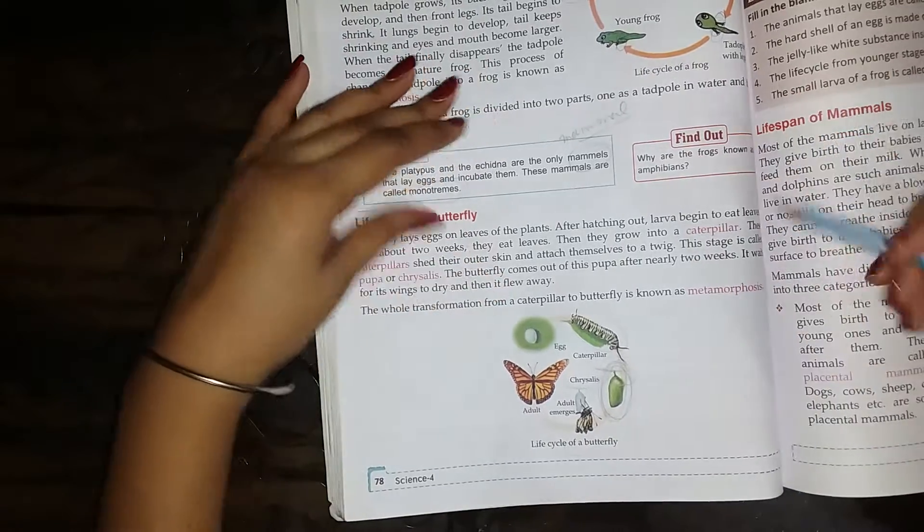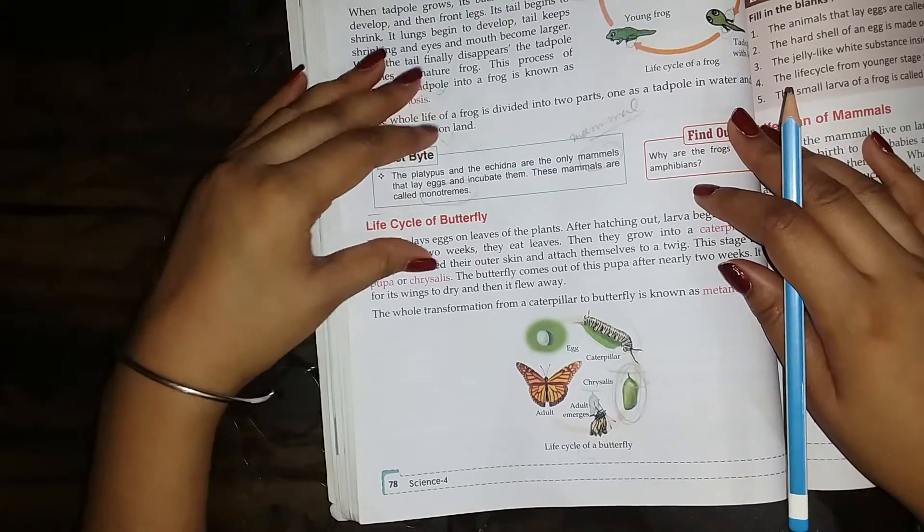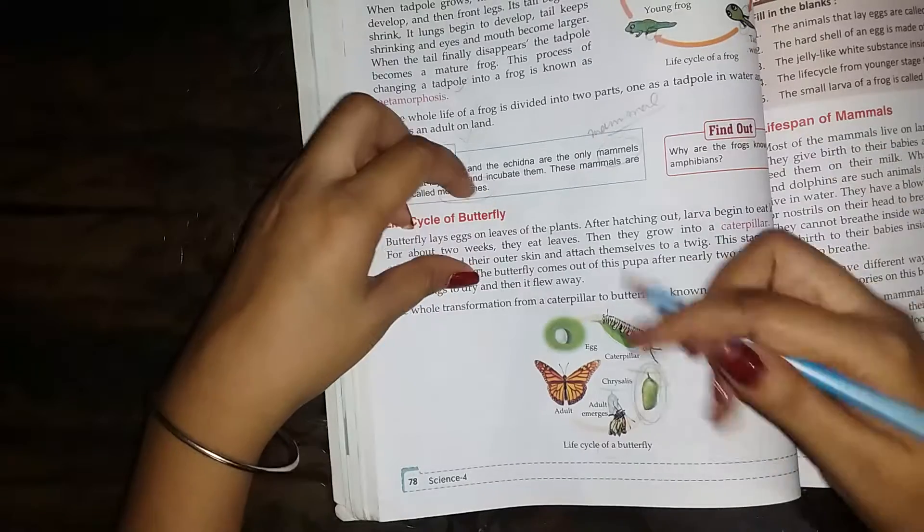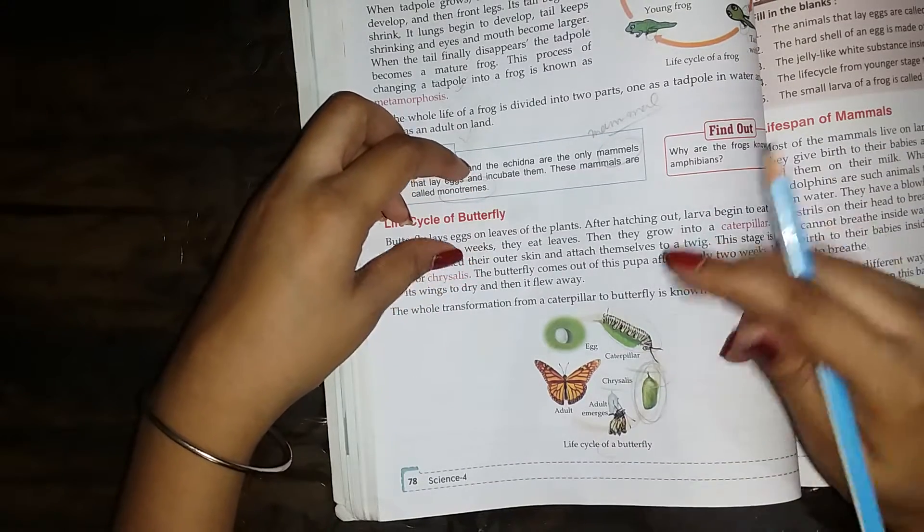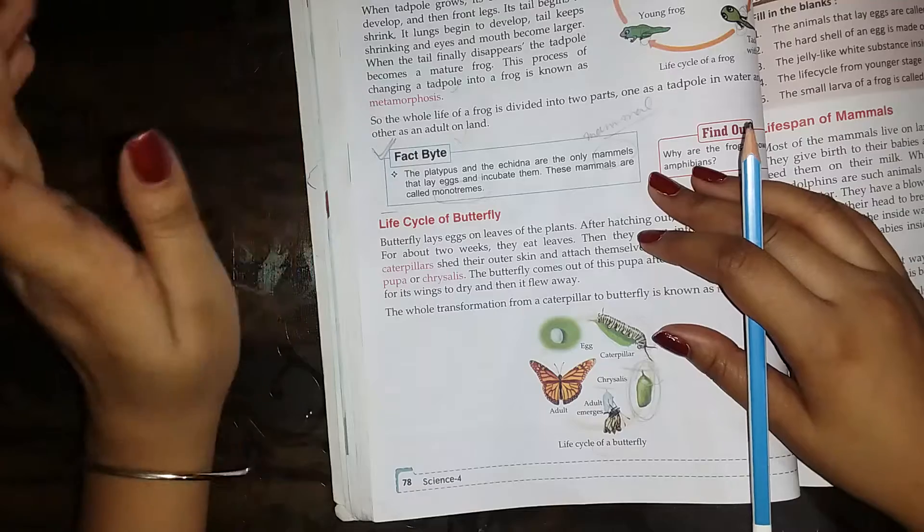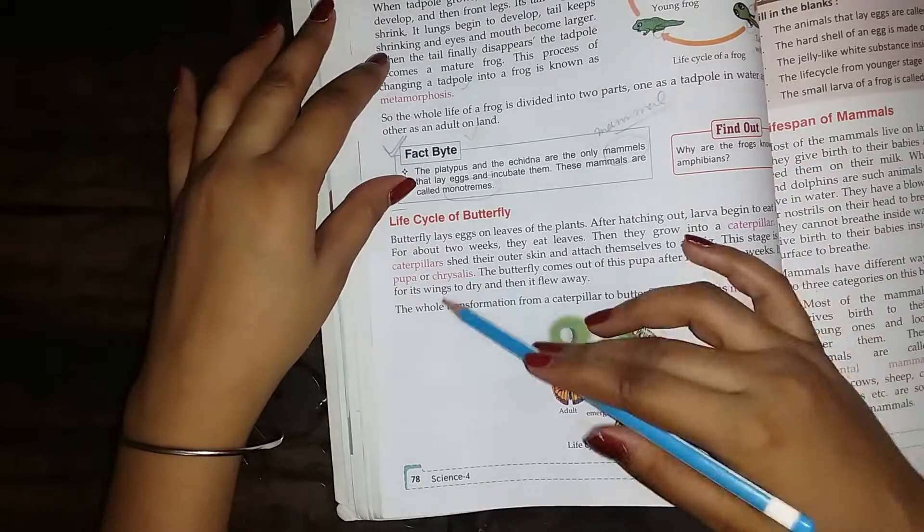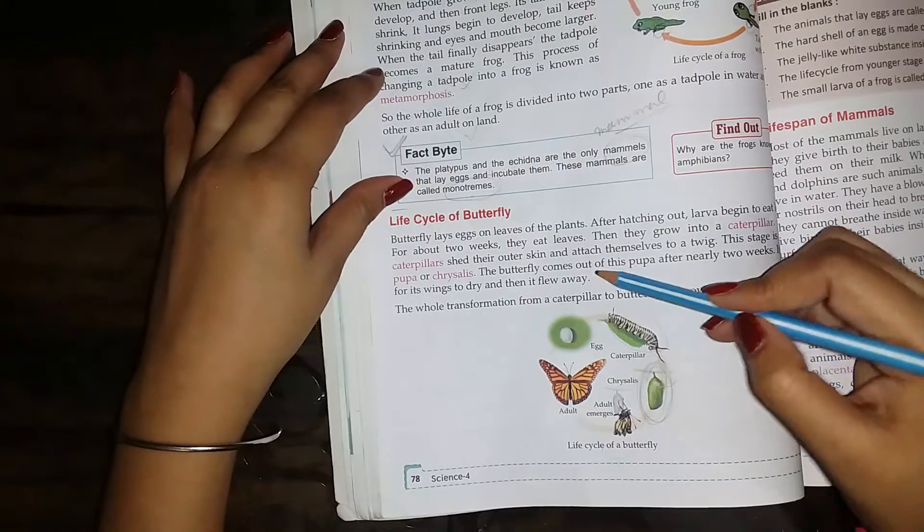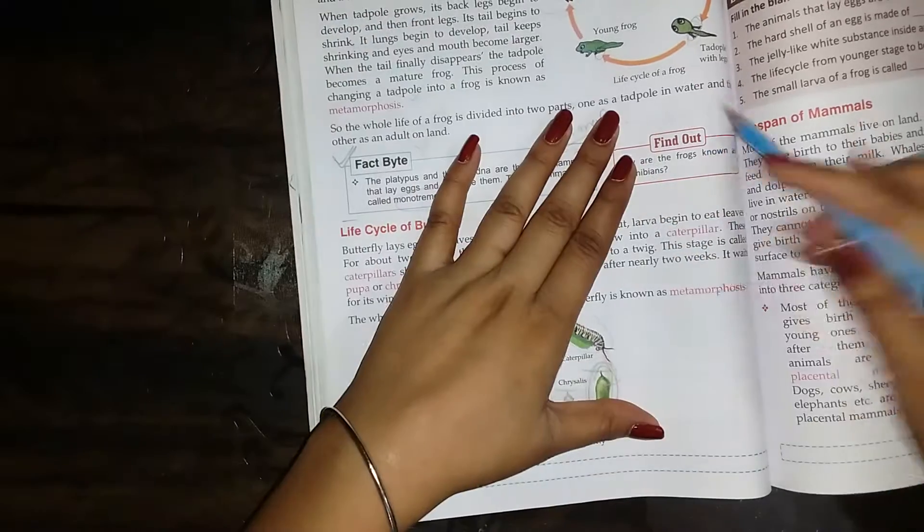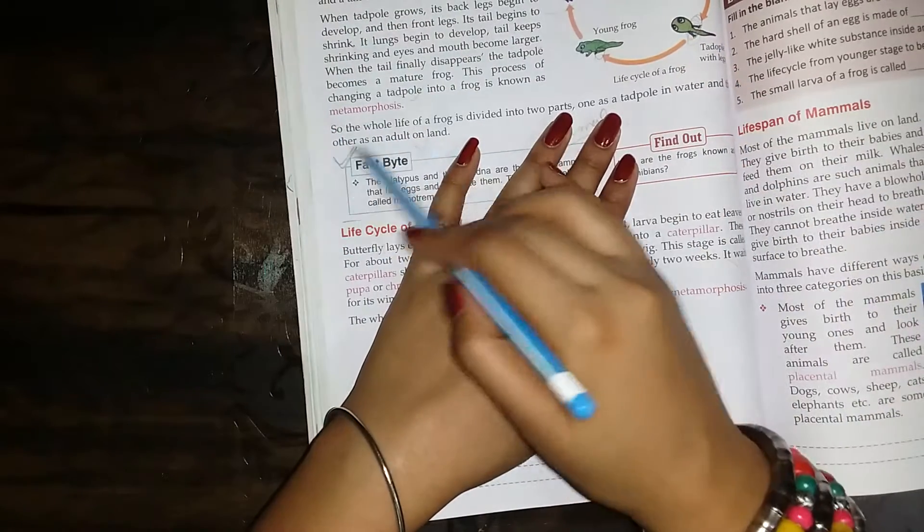It waits for its wings to dry. When its wings are dry, then it goes up. The whole transformation of caterpillar to butterfly is called metamorphosis, like in frog. Metamorphosis.